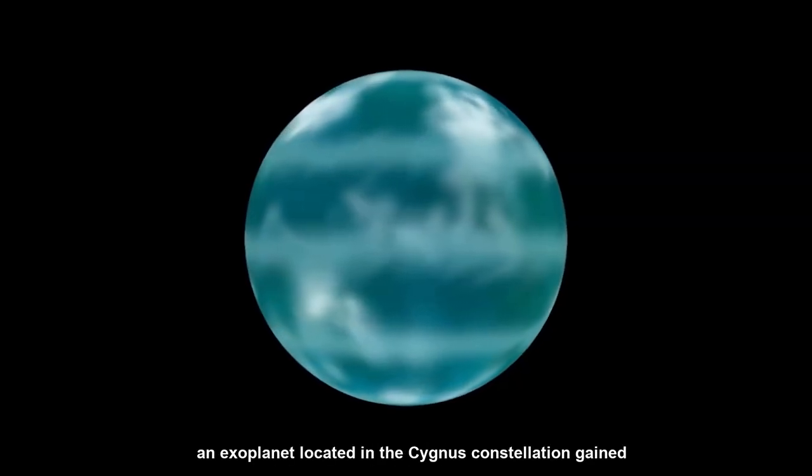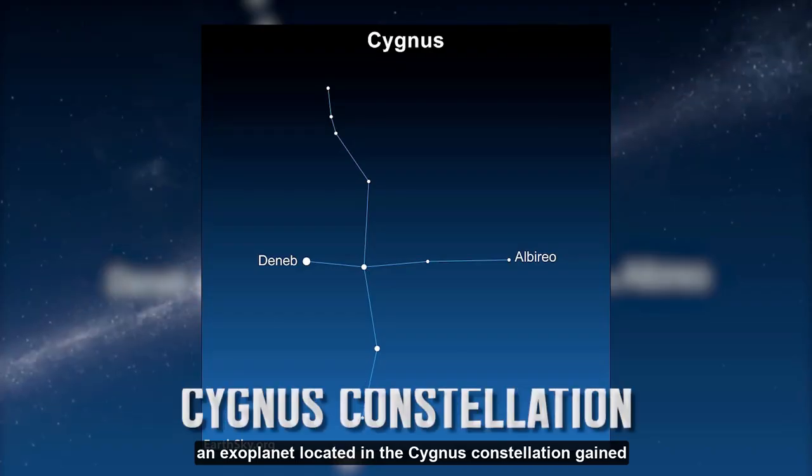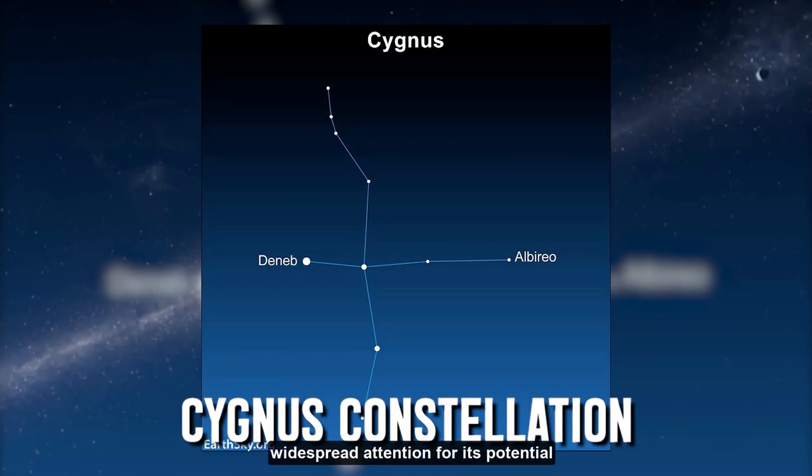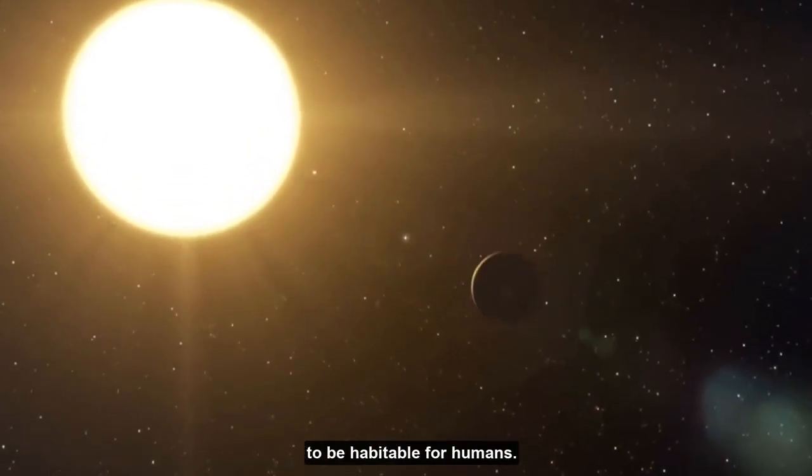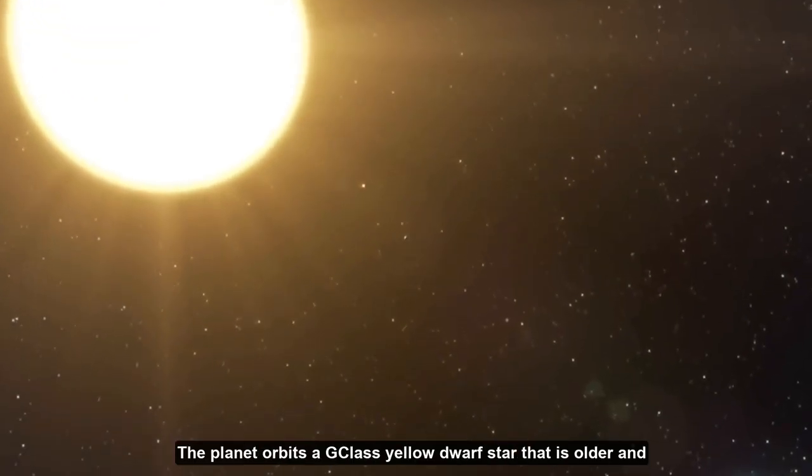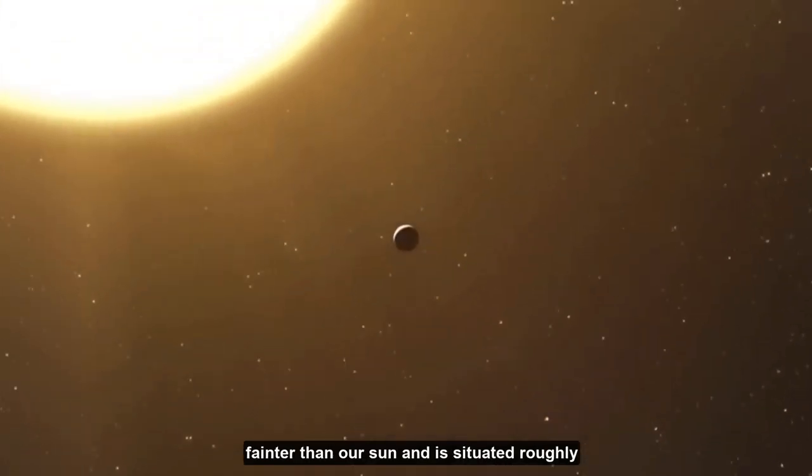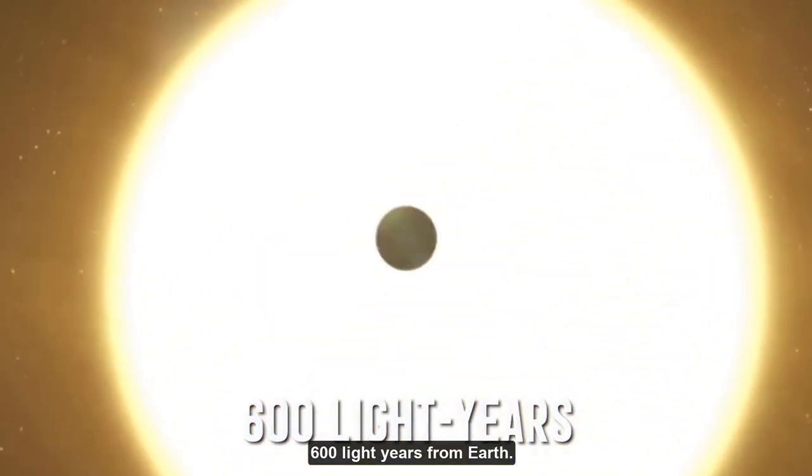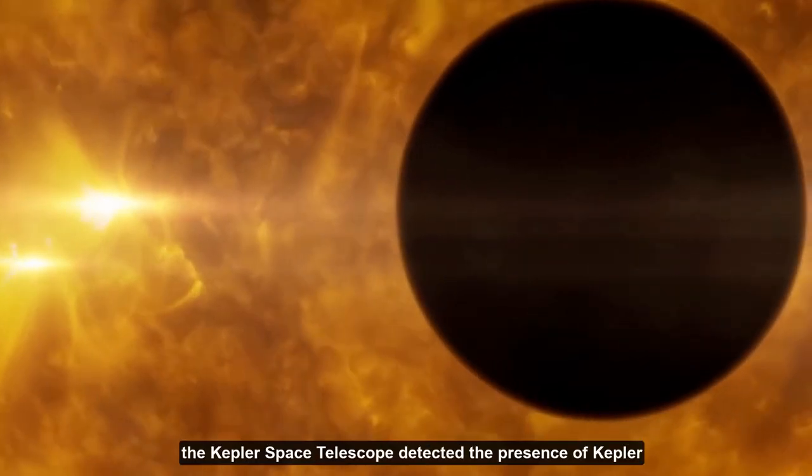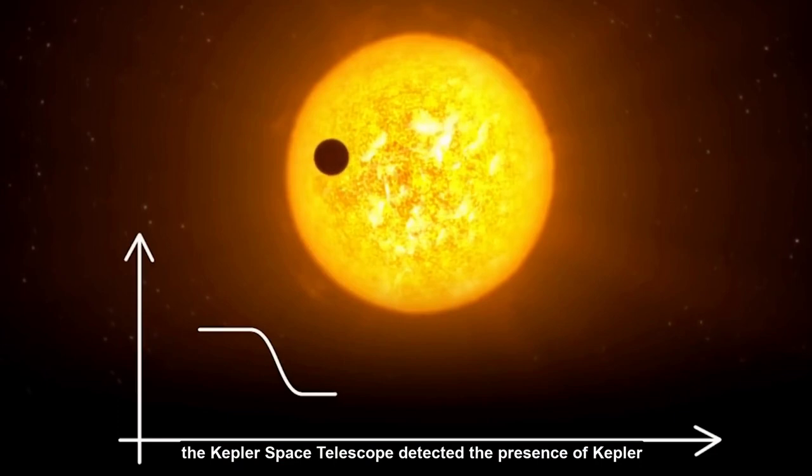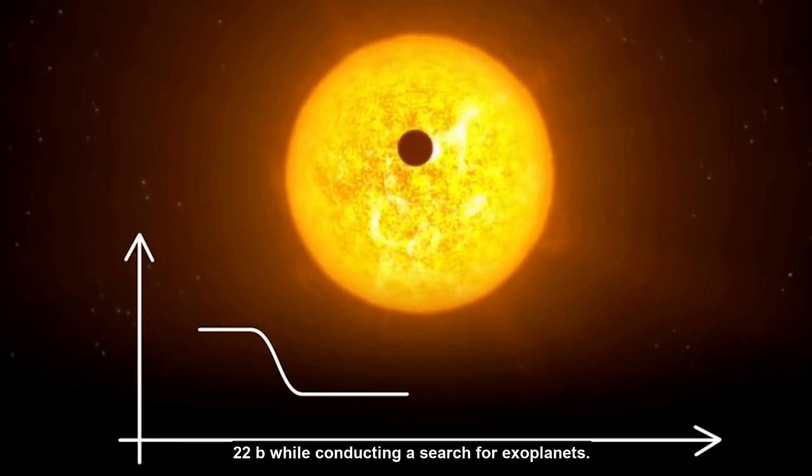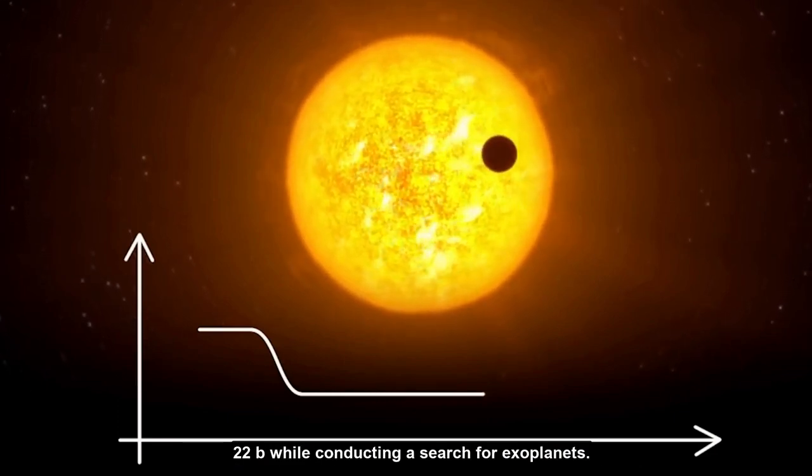Kepler-22b, an exoplanet located in the Cygnus constellation, gained widespread attention for its potential to be habitable for humans. The planet orbits a G-class yellow dwarf star that is older and fainter than our sun and is situated roughly 600 light-years from Earth. In 2011, the Kepler Space Telescope detected the presence of Kepler-22b while conducting a search for exoplanets.